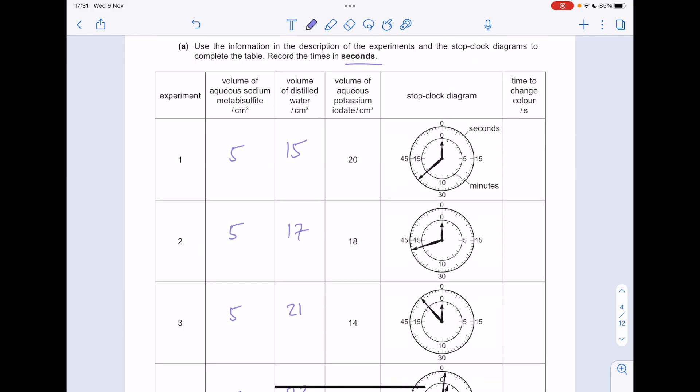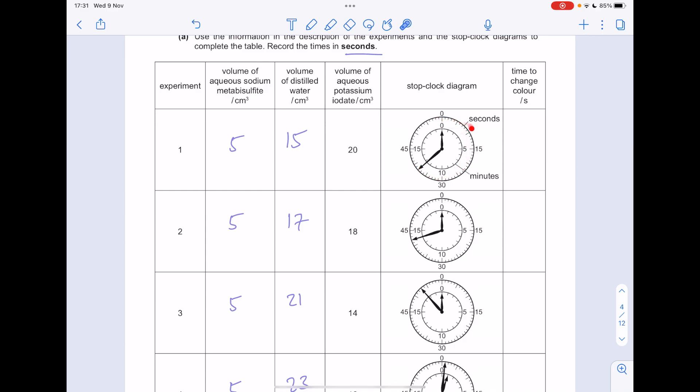They filled in the volume of potassium iodate, so we don't need to touch that. What about this time to change colour in seconds? Look at the stop clock diagram. The outer ring represents seconds. The inner ring represents minutes. So whilst that arrow points at zero, we know that there's no complete minutes here. But what about the number of seconds to turn colour? Make sure you count this. It goes from 30 here to 45 there. So just count them. 31, 32, 33, etc. And you'll go all the way up to 38 seconds.